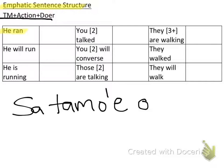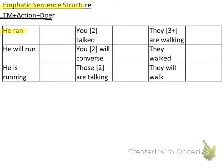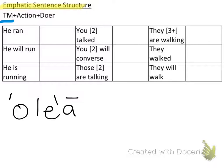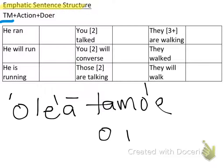The next one is 'he will run' — basically just changing the tense. The first question is: what tense am I speaking in? It won't be 'sa' anymore because that's past tense. The future tense marker is 'olea.' Then my action is the same: 'tomoe.' And then my doer is the same: 'oia.' So 'olea tomoe oia' is how you say 'he will run' in Samoan.